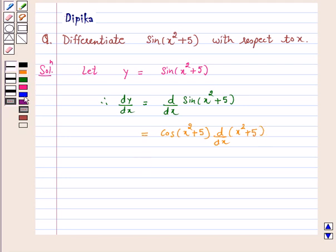This is equal to cos(x² + 5) times 2x, because the derivative of x² + 5 is 2x plus 0. So, times 2x.